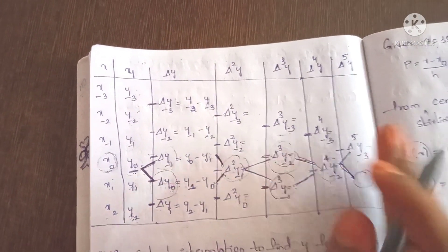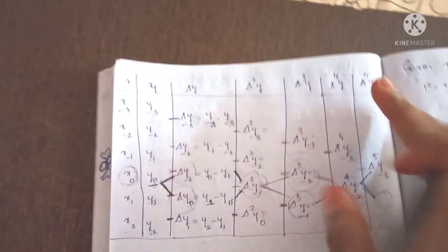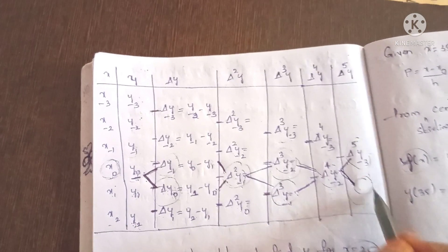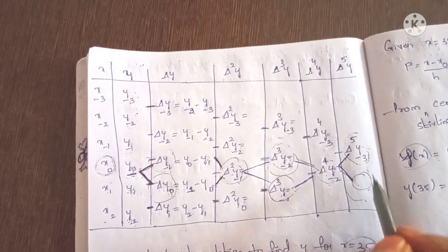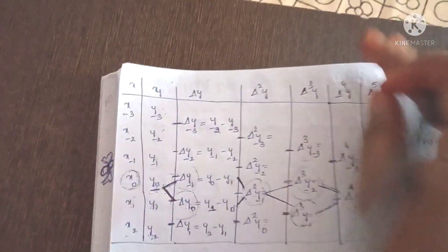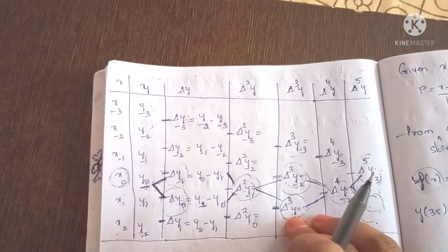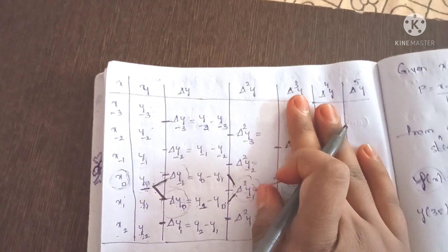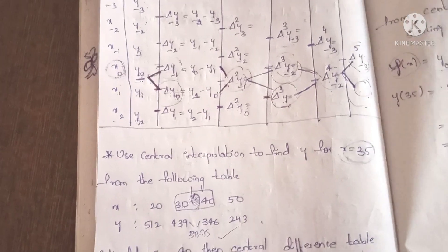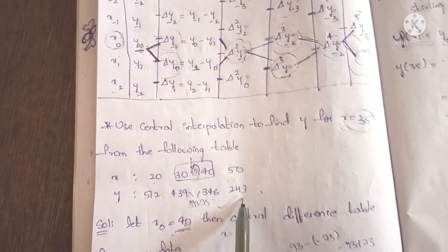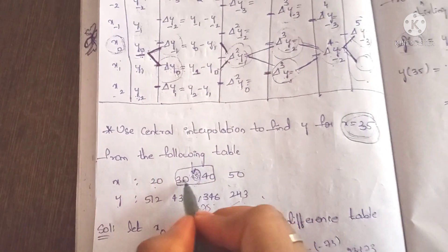Now we substitute these values. The first problem: use central interpolation to find y for x = 35 from the following table. The x values are 20, 30, 40, 50 and the corresponding y values are 512, 439, 346, 243. Since x = 35, and it is near the center, we use central difference interpolation.